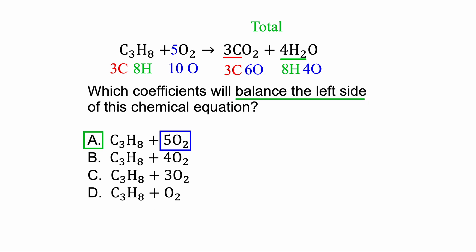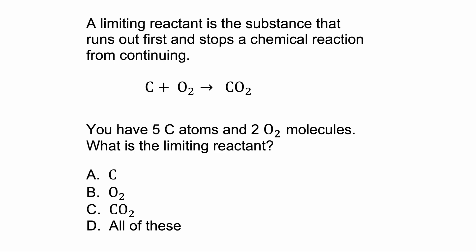One last type of problem: you may be asked about a limiting reactant, but they'll tell you what that is. A limiting reactant is the substance that runs out first and stops a chemical reaction from continuing. You already know what a reactant is — it's something on the left side of the equation. So a limiting reactant has to be one of the reactants, meaning it could be A or B, but not the products.